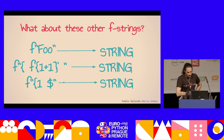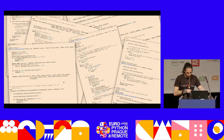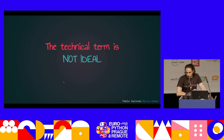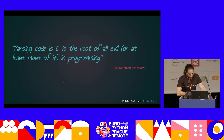This is kind of a problem. There is another problem: the code that creates this fantastic behavior looks horrendous. This is really bad — all manually written C code. This is around 1,400 lines of manually written stream parsing code in C. The technical term for this is 'no deal.' That's the technical term. But if you don't believe me, allow me to quote Donald Knuth. It says parsing code in C is the root of evil — or most of evil. And it's true. If you try to do anything in C you may succeed, except if you try to do parsers. And then you will be miserable. Believe me — I maintain the Python parser.